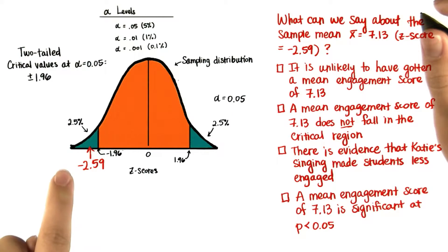Since it's in this critical region, we can say that it is unlikely to have gotten a mean engagement score of 7.13.